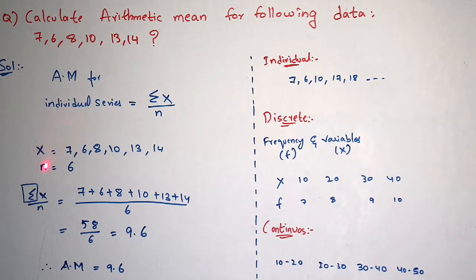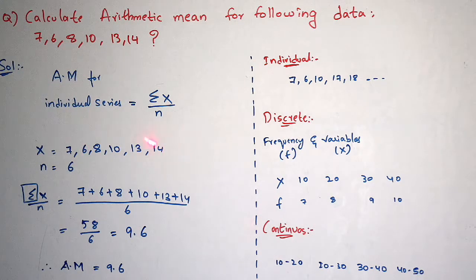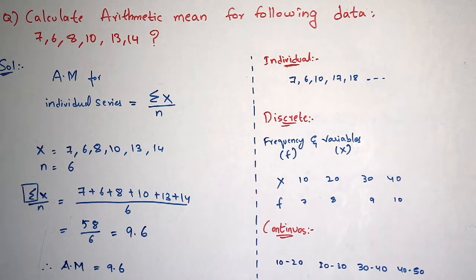The formula for arithmetic mean in individual series is sigma x by n. Here x means variable — the variables are 7, 6, 8, 10, 13, 14. And n is equal to 6, which is the number of variables. Counting them: 1, 2, 3, 4, 5, 6 — so totally there are 6 variables. N indicates number of variables, so you write 6 here.